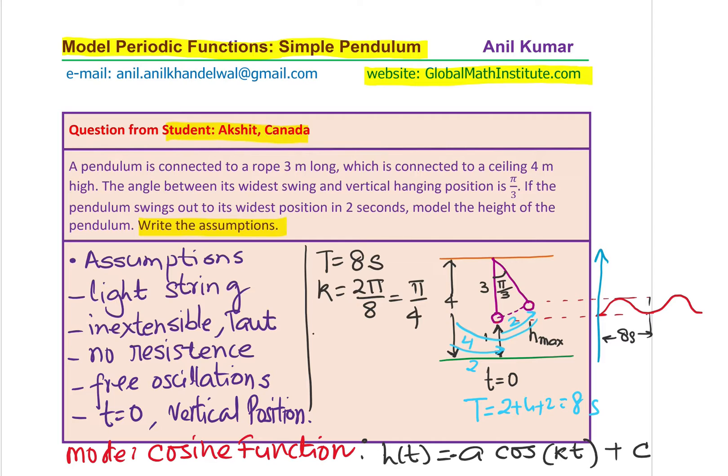In this case, we also have minimum height. We try to write height minimum will be how far above the ground it is. It is 1 and the maximum height will be how much. To calculate the maximum height, we will have to analyze this particular triangle.